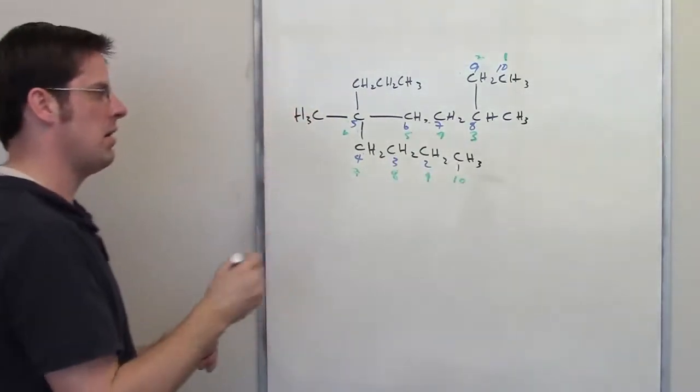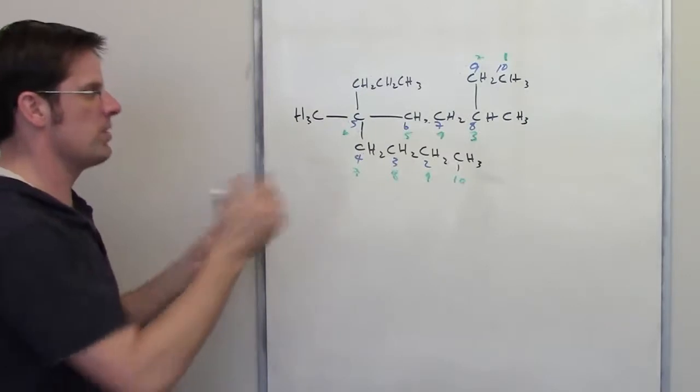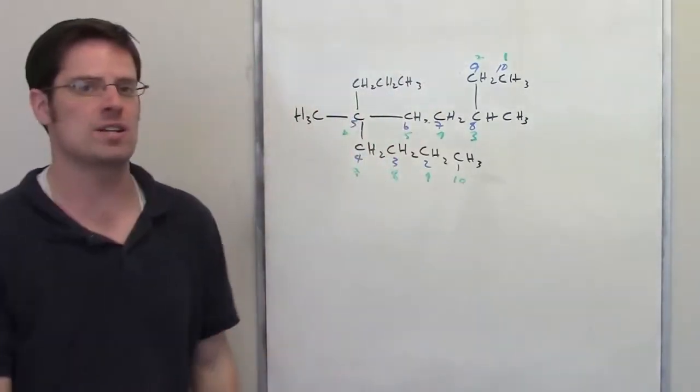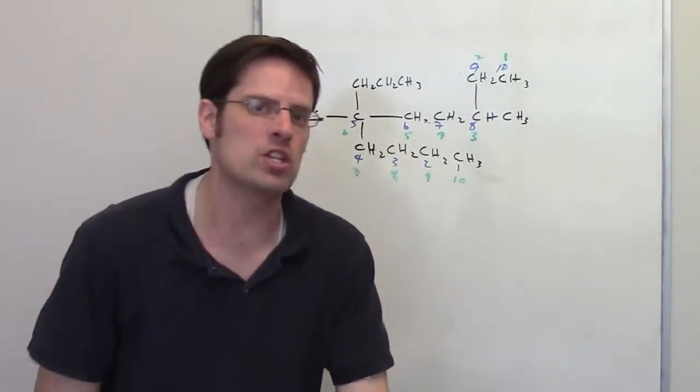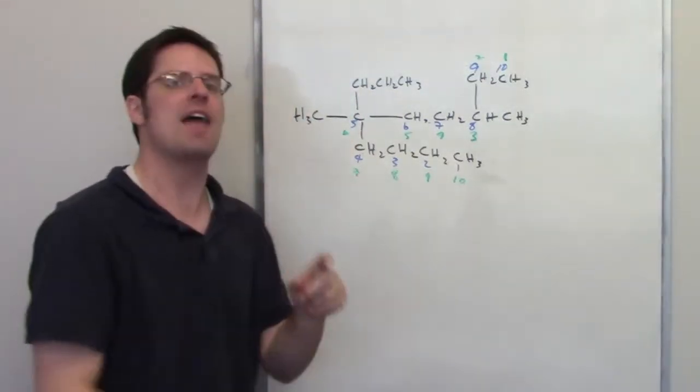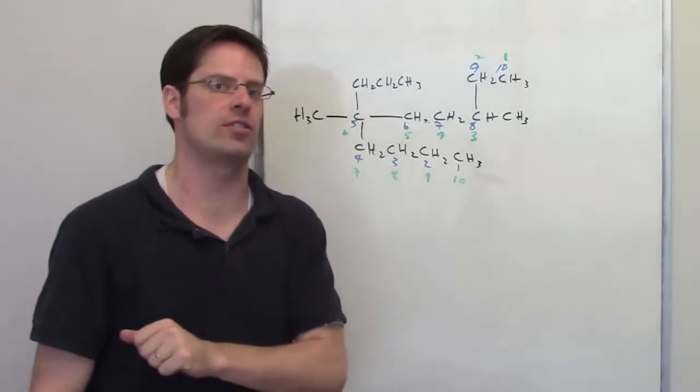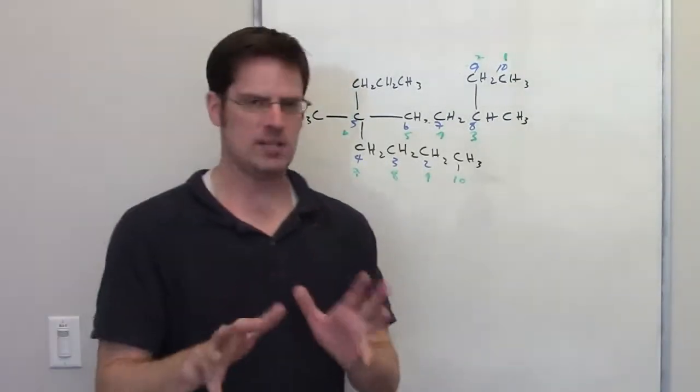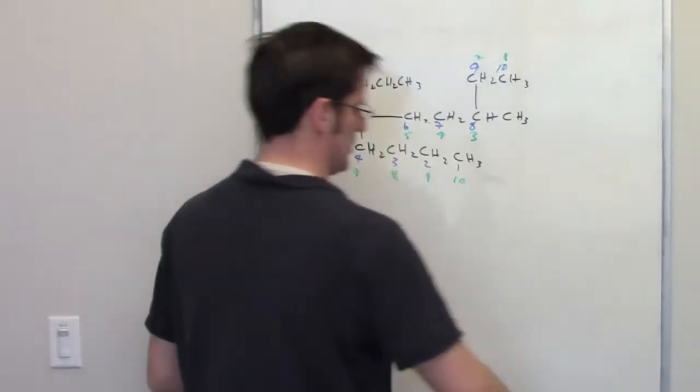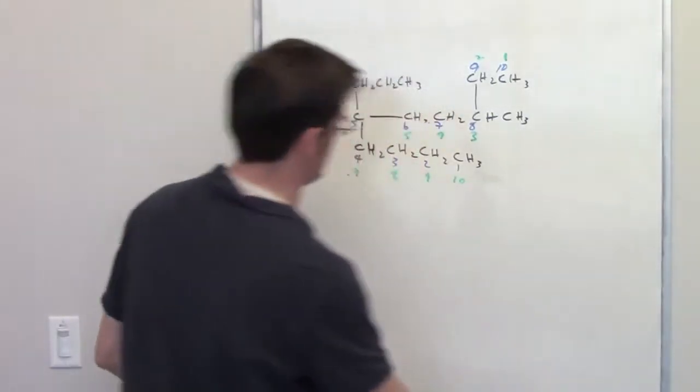Those are both ways I could do it. Which one is right and which one is wrong? Well, the one that's right ends up being whichever one gives you the lowest number at the first point of difference. I realize that sentence might sound extremely confusing. Please allow me to elaborate.